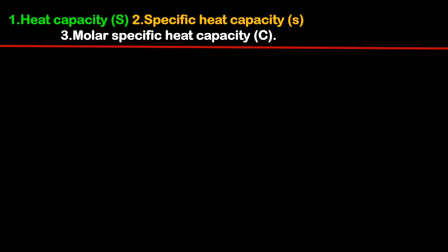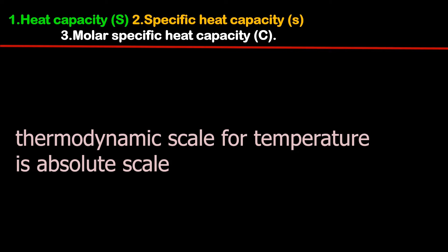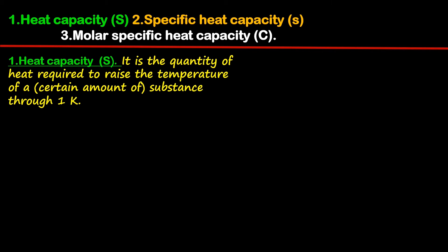Unless we know this property of the substance present in the system, we cannot supply the correct amount of heat energy so that the required work can be performed. In thermodynamics, the scale of temperature is the absolute scale and the unit is kelvin, symbol K. Heat capacity (capital S) is the quantity of heat required to raise the temperature of a substance through one K.